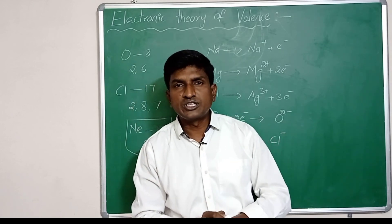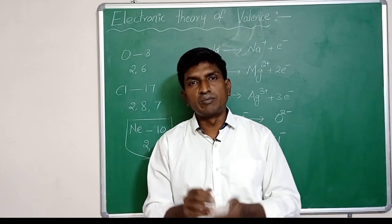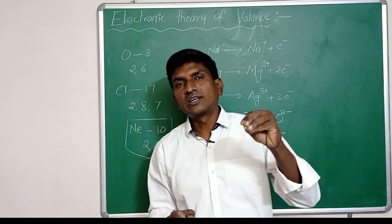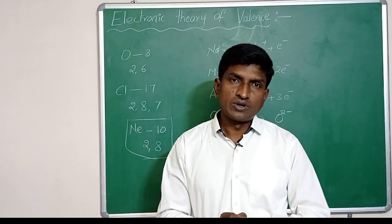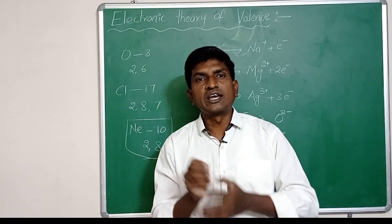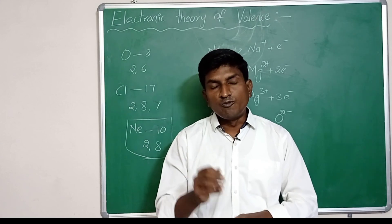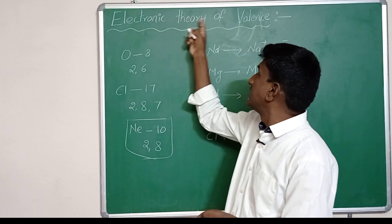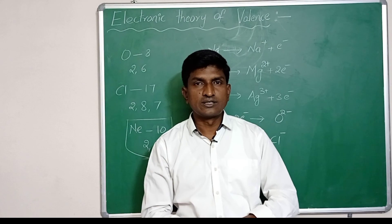In this way, every atom undergoes chemical change to get 8 electrons in its outermost orbit by losing or gaining electrons. This is the basis of the octet rule. The octet rule states that all atoms undergo chemical reactions to achieve 8 electrons in their outermost orbit, which gives them stability. This is the electronic theory of valence given by Kossel and Lewis. Thank you.